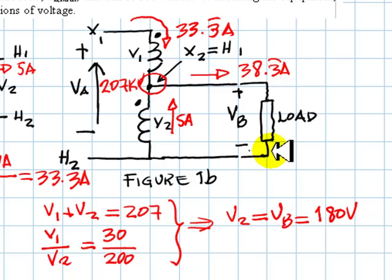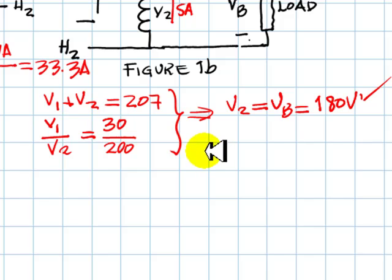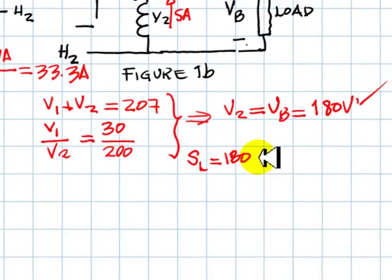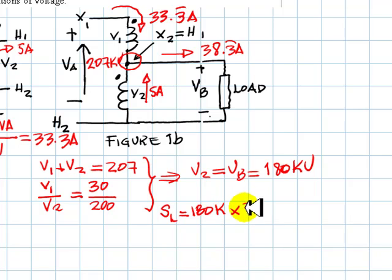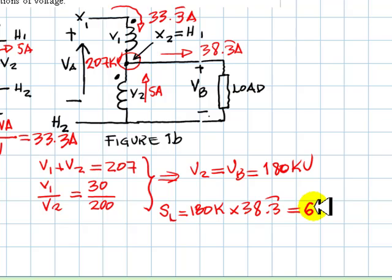What is the power in this case? 180 volts, which is Vb, times 38.3 amps. In short, the power in the load will be 180 kilovolts. This should be kilovolts, right? That multiplies 38.3 amps, 6,900 kVA.